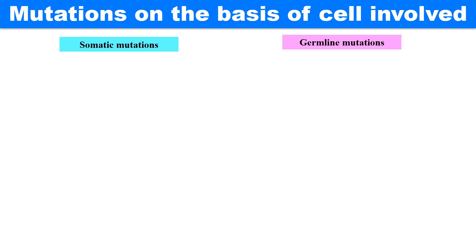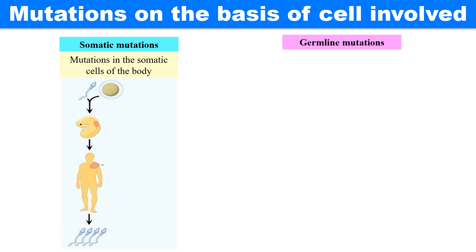So first, somatic mutations. As the name indicates, these are mutations that occur in the somatic cells of the body. In this chart you will see a typical life cycle of a human being which starts from the germ cells. In the body, the sperm and egg are the germ cells, while all other cells are the somatic cells of the body. When a mutation takes place in the somatic cells — like here, where the mutation is occurring in the embryo.